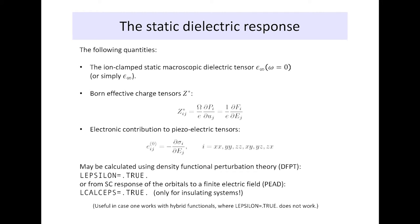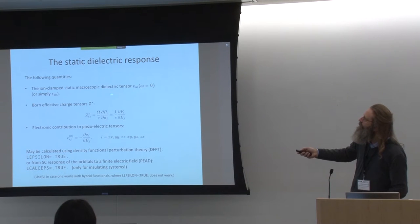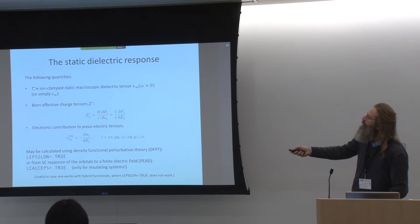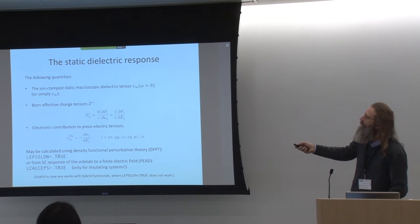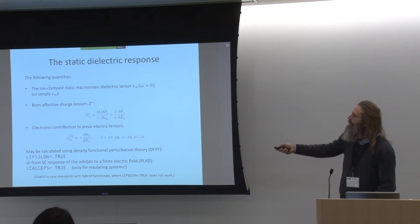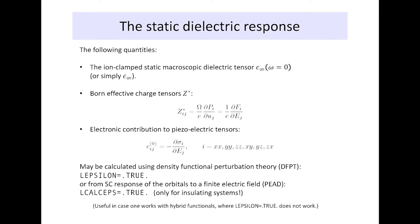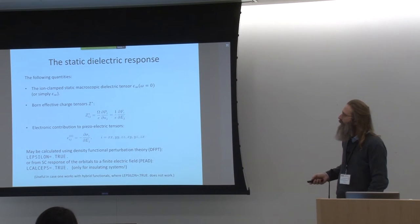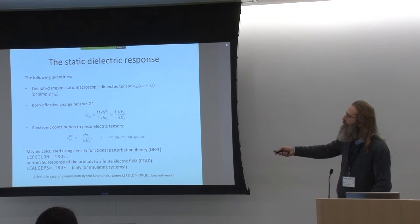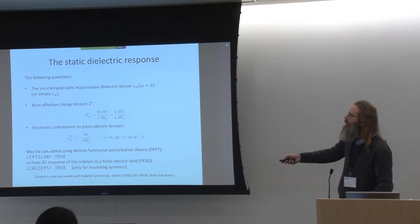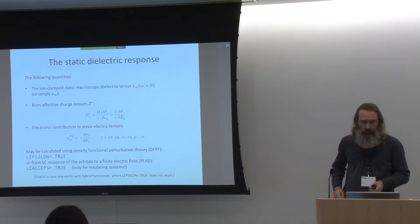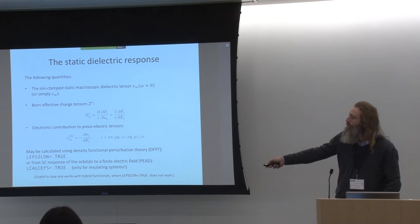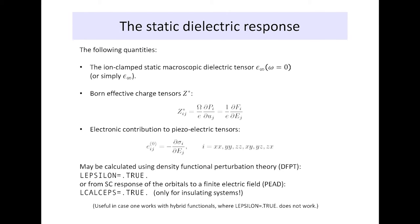Let's turn to static dielectric response. The program can calculate the ion-clamped static macroscopic dielectric tensor ε∞ at omega equals zero, the Born-effective charge tensors — the amount of charge that moves with your atom, i.e., the change in the polarization of your system when you move an atom — and the electronic contributions to piezoelectric tensors. These can be calculated either using density functional perturbation theory with LEPSILON=.TRUE., or from the self-consistent response of the orbitals to finite electric fields. There are examples in the hands-on session dealing with these aspects.